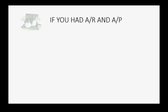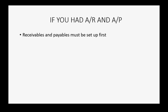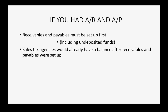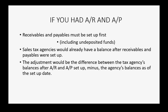Our example numbers would be different if we had accounts receivable and accounts payable. If that were the case, we would have set up receivables and payables before setting up sales tax, and that would include the section of undeposited funds. The sales tax agencies would already have balances after receivables and payables were set up. So the adjustment would be the difference between the tax agency's balances after accounts receivable and payable setup minus the agency's balance as of the setup date.